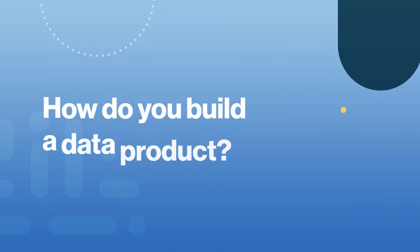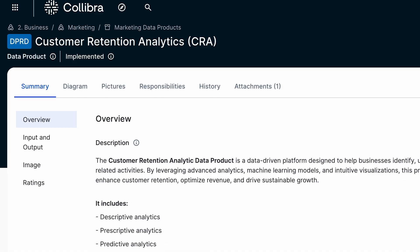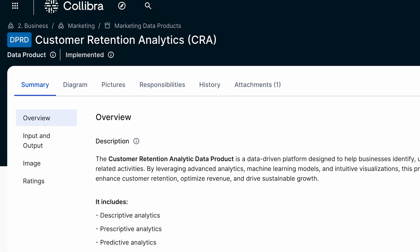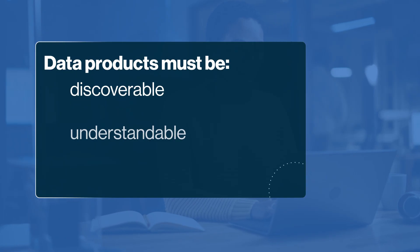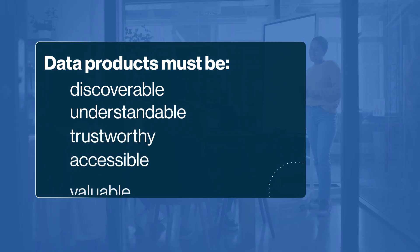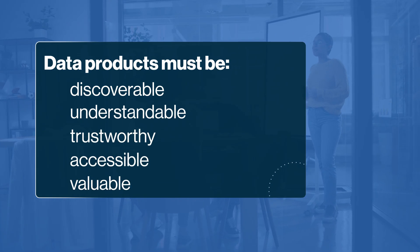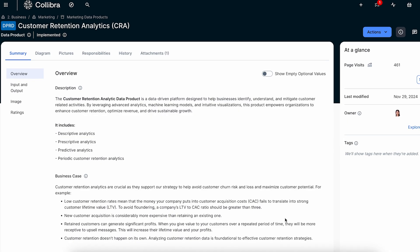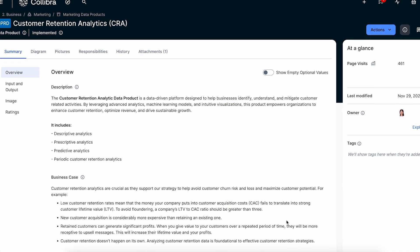Hi, I'm Peter Brinson, Senior Director of Product Management at Conibra. Building a data product involves a well-structured framework to ensure it's discoverable, understandable, trustworthy, accessible, and valuable for the appropriate users. Let's take a look at the four key stages of creating a successful data product.